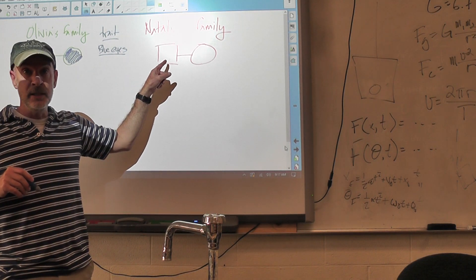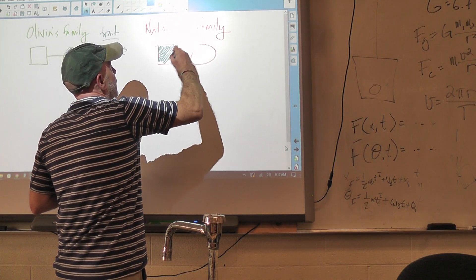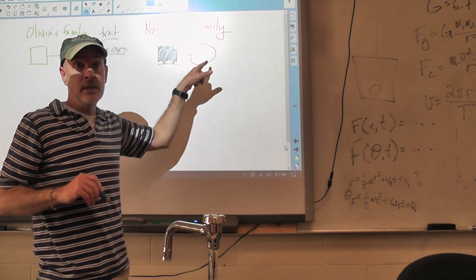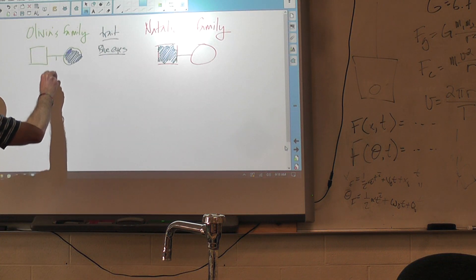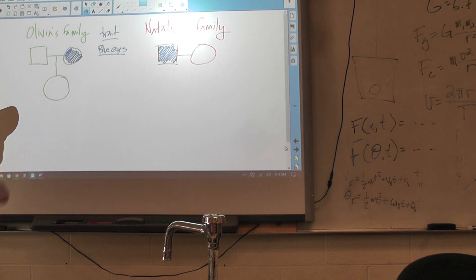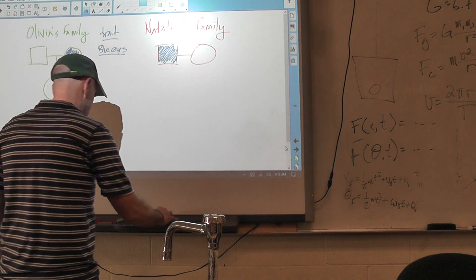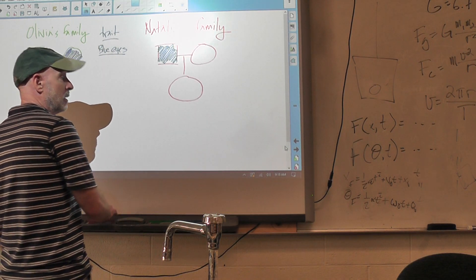Natalie, does your dad have blue eyes? Yeah. Does your mom have blue eyes? No. Okay. And then we're just going to look at Olivia and Natalie here. So here's Olivia. Olivia, do you have blue eyes? No. Okay. Natalie, do you have blue eyes? Yeah. All right.